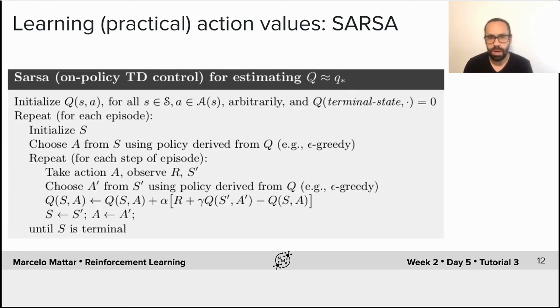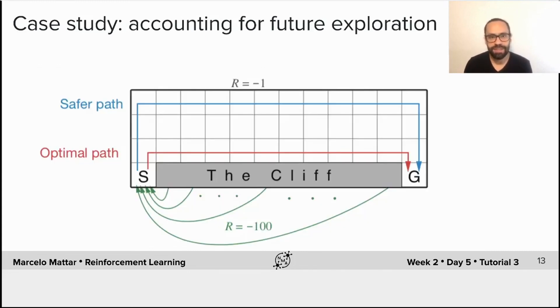So SARSA is one of the most common on-policy learning algorithms. And in fact, it works almost identically to Q-learning. The only difference is that when updating value estimates, SARSA doesn't use the maximum value available at the next state. Rather, SARSA will use the value of the action that is specified by the agent's own current policy, which is shown here as Q(S', A').